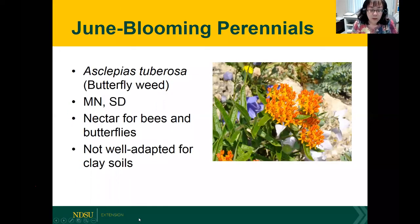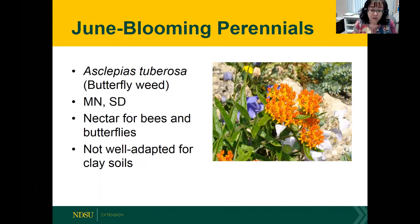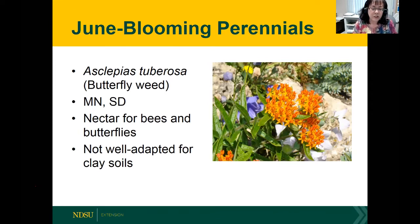As for other June-blooming perennials, you may want to consider butterfly weed, which is a milkweed native to Minnesota and South Dakota. Everybody thinks milkweed means butterflies and monarchs, and it's certainly wonderful for them, but milkweed is also important for bees as it produces a large amount of nectar. For butterfly weed, you need to be careful where you plant it — it doesn't do well in the Red River Valley because of the heavy clay soils. This plant does better on sandy or loamy soil.